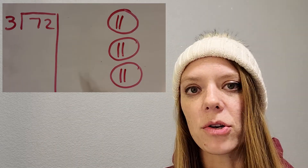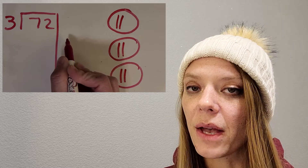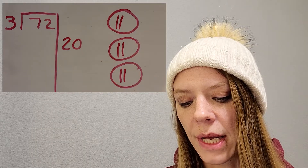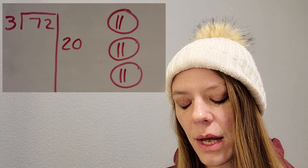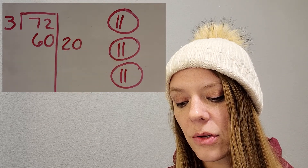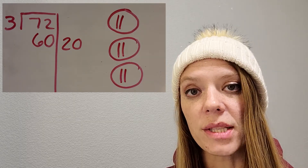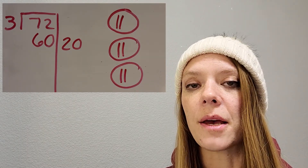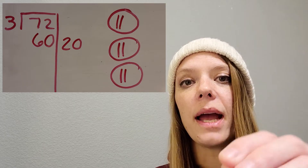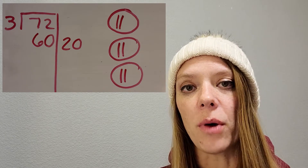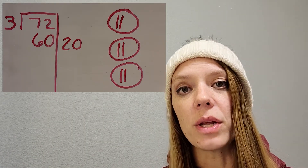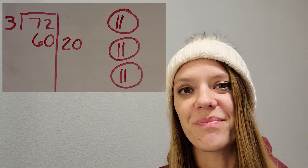Here's how I write it in partial quotients. On the outside I put the amount I'm giving each friend, so I'm giving them each twenty. And then on the inside I put sixty — the total snowballs — down below the seventy-two. The point of doing that is that when I'm dividing and separating into groups, I am repeatedly subtracting snowballs from my big pile and giving them to friends. So division really is like repeated subtraction.